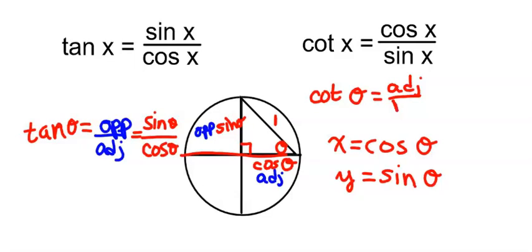All right, so that means that we're dealing with adjacent side, which is cosine, and our opposite side, which is sine.